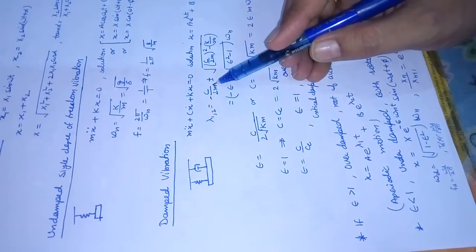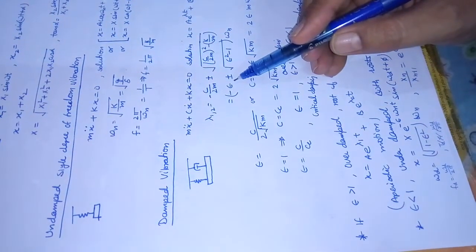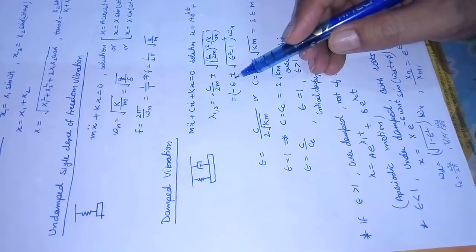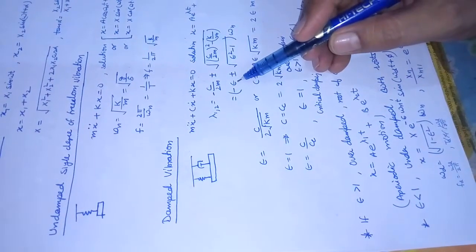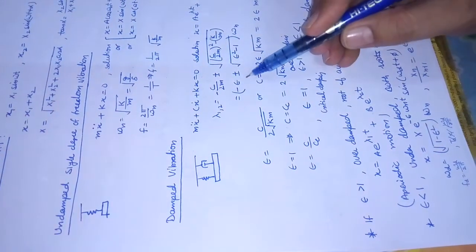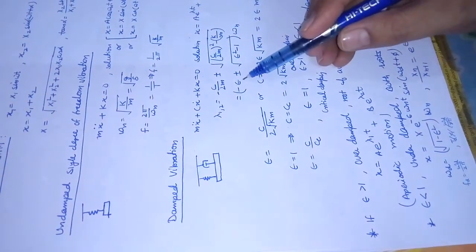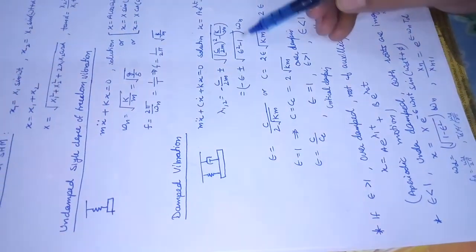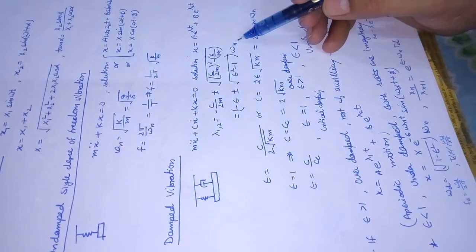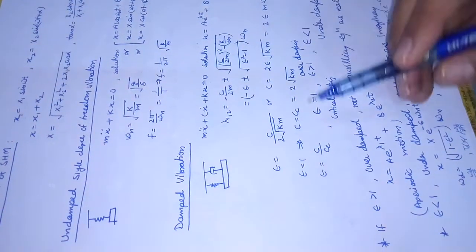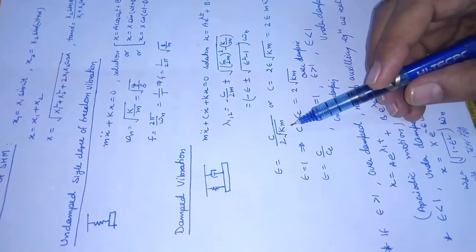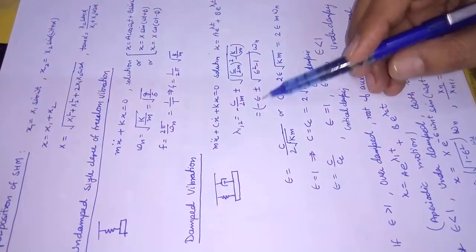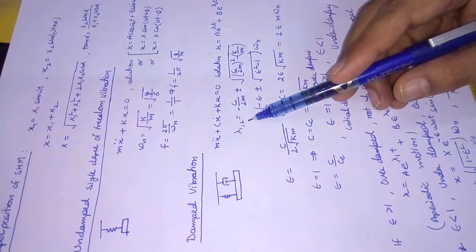c/2m can be replaced by ε, the damping ratio. So the equation can be reorganized as λ₁,₂ = (-ε ± √(ε² - 1)) · ωₙ, where ωₙ is the natural frequency. Depending on the value of ε, λ₁ and λ₂ fall into three categories.